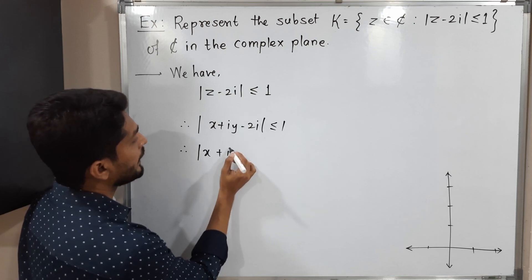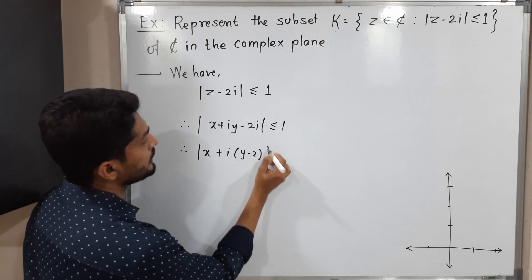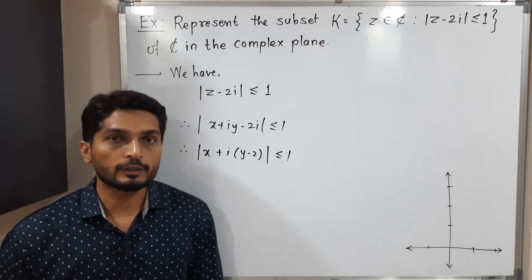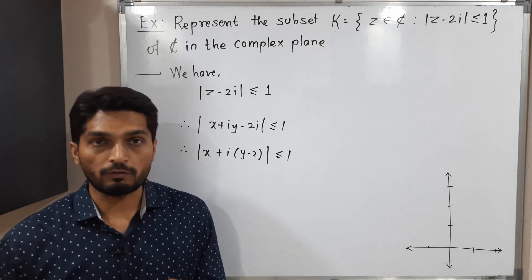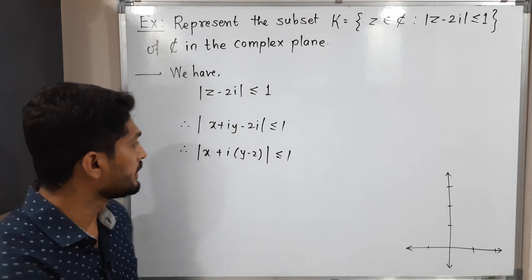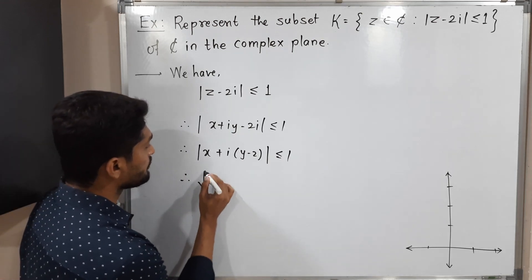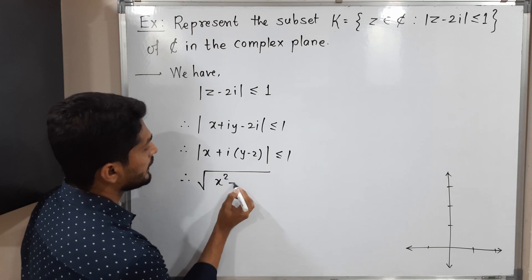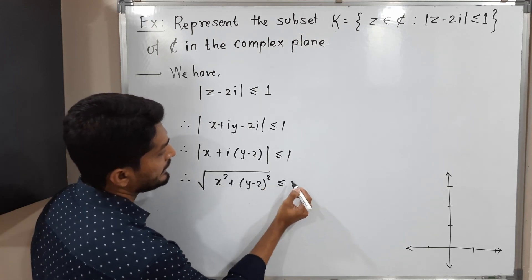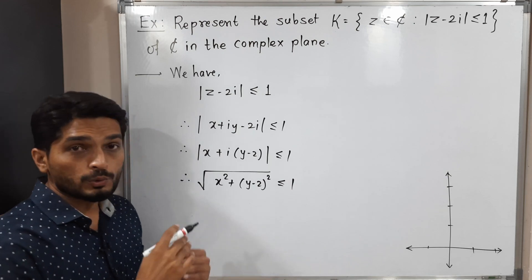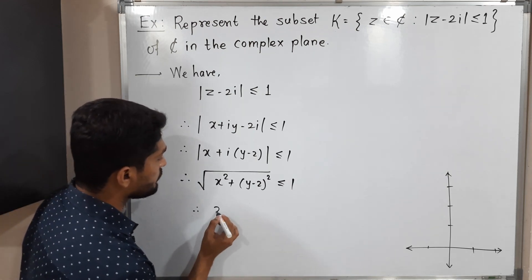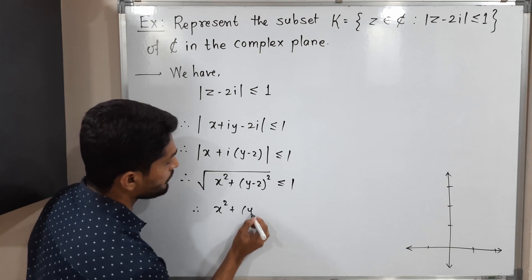We can take i common and write y − 2, so mod(x + i(y − 2)) ≤ 1. We are familiar with the definition of mod, which is the square root of the square of the real part plus the square of the imaginary part. So following the definition: √(x² + (y − 2)²) ≤ 1.